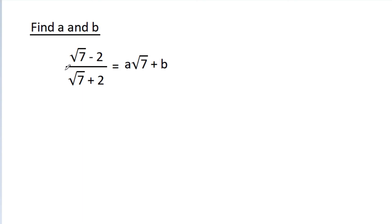In this video, we are given that (√7 - 2) / (√7 - 2) is equal to a times (√7) minus b. Then find a and b.